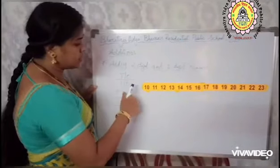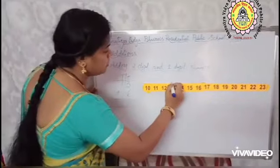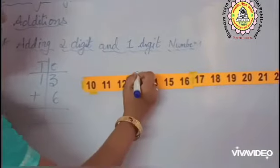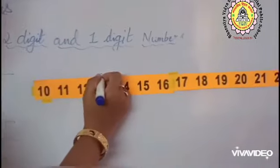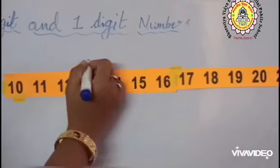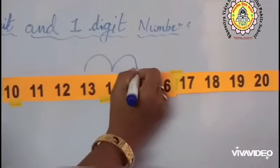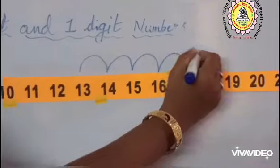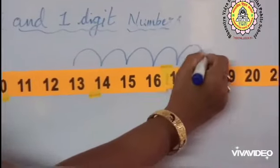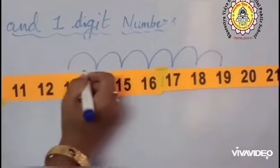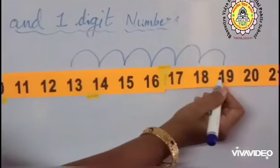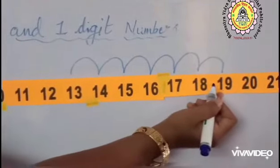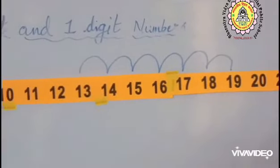Number 13 is given. From 13 onwards, we have to go 6 steps forward. See here: 13 — 1, 2, 3, 4, 5, 6. 13 plus 6 is equal to 19.